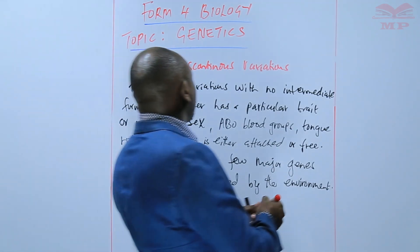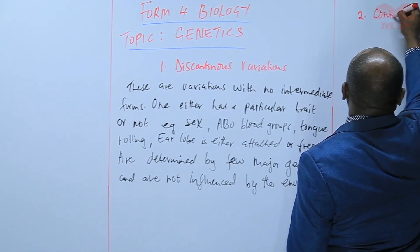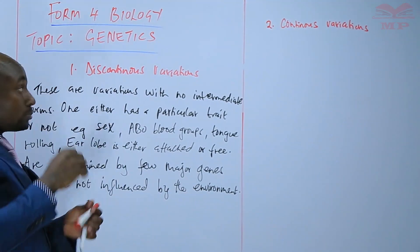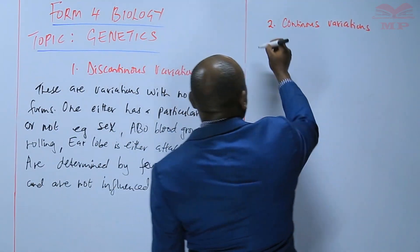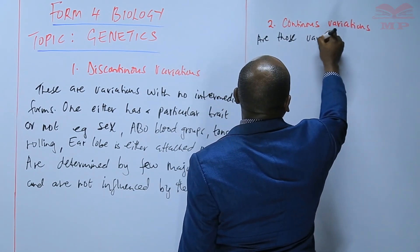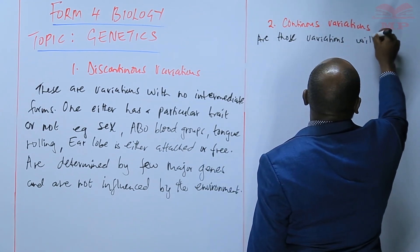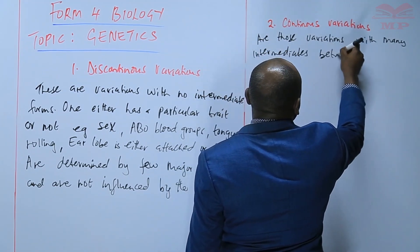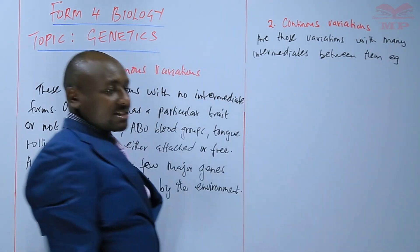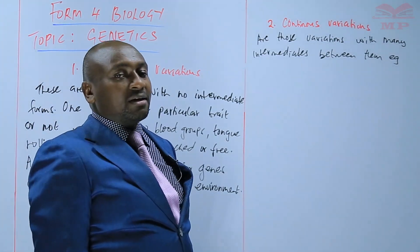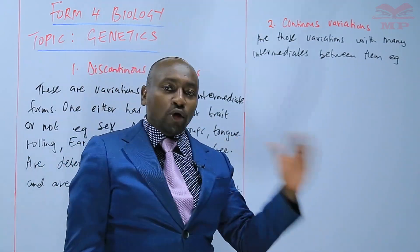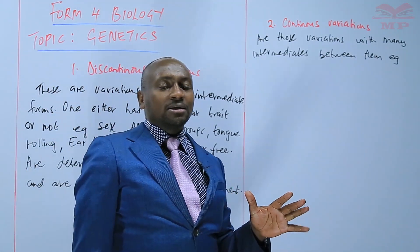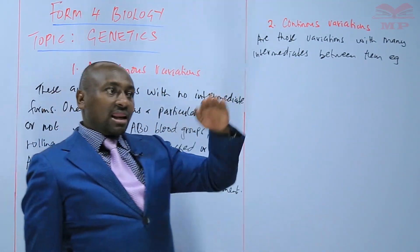Let us discuss the second type of variations — continuous variations. These are the variations with many intermediates between them. For example, if you take something like height, we have very tall people, moderately tall people, tall people, slightly tall people, moderately short people, and short people. There are so many intermediates — it is like a staircase, and wherever you go you will find people at every level.